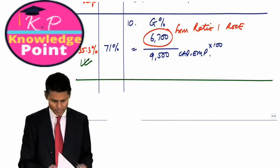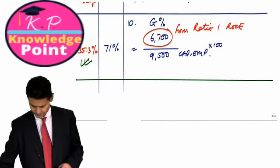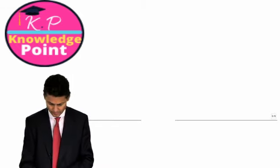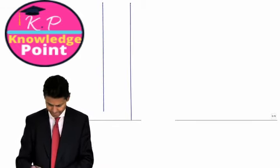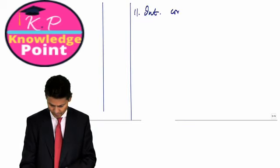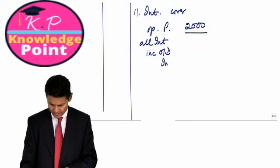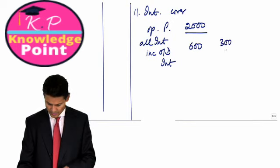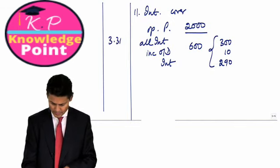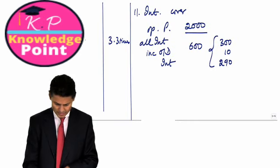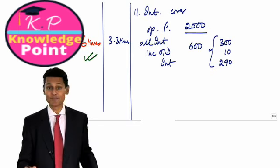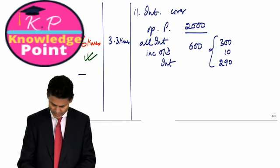Let's do a couple more ratios. Interest cover, which is operating profit 2000 divided by all interest including overdraft interest, finance cost. 600, 300, 10, and 290 from the income statement. And so it is 3.3 times. Whereas the other one was six times. Clearly the more times, the better, the safer the company. And so we come to our last ratio. Take your time over this. Dividend cover, which is profit after tax 1000 divided by dividend which is obviously 700. Dividing one by the other, 1.4 times. And the one on the left, 3.6 times. And the more the better.